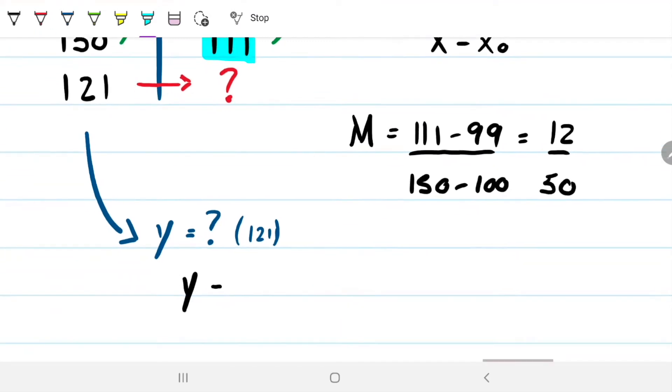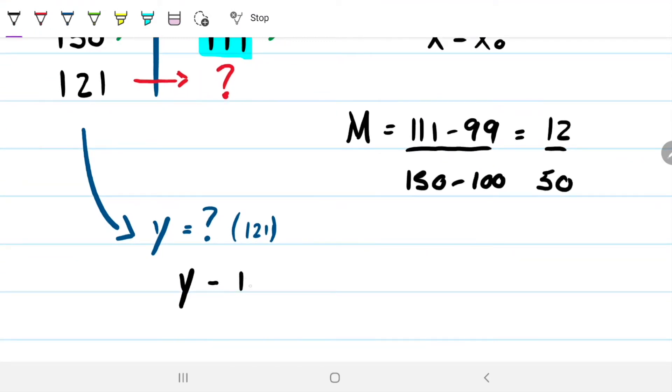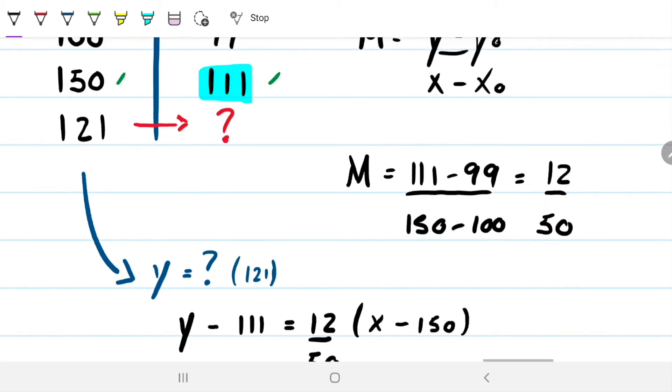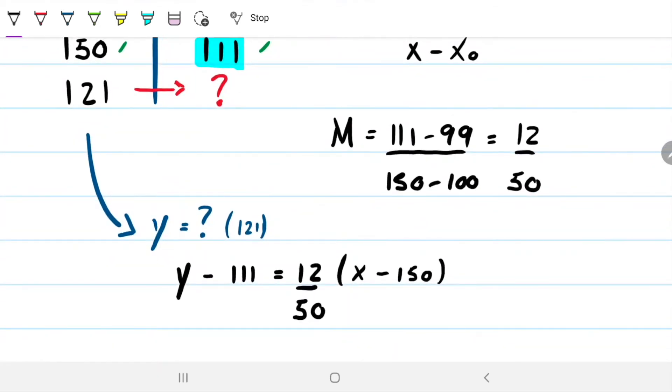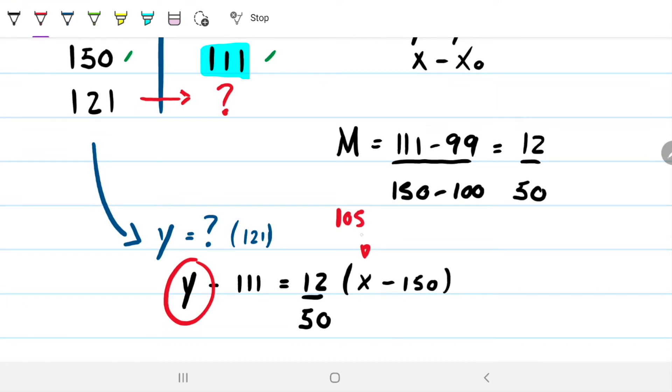So minus 111 equals the slope that we just found, 12 over 50, times the X. So the X that I'm looking for and the X that we have. So 111 is 150. This is a general equation for this line that we are assuming. So what do we know? If we want the 121 value there, that's what I want to plug in there, 121. And then I want to solve for this Y. But I could plug any value that I want. I could plug 105 or something like that. So that's what we're going to do.